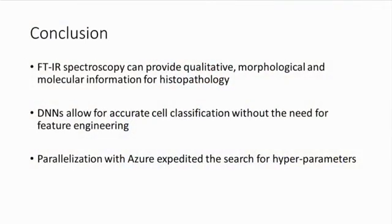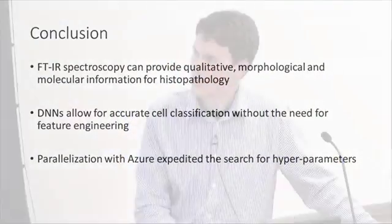In conclusion, FTIR spectroscopy has a lot of potential to provide quantitative morphological and molecular information for histopathology. There's still a great need in histopathology for more accurate diagnosis, and we hope FTIR can aid greatly in that. Using deep neural networks allows for accurate cell classification and allows us to continue improving without the need for feature engineering or domain knowledge. With Azure, we were able to parallelize this parameter search, which greatly expedites the process of searching for hyperparameters.